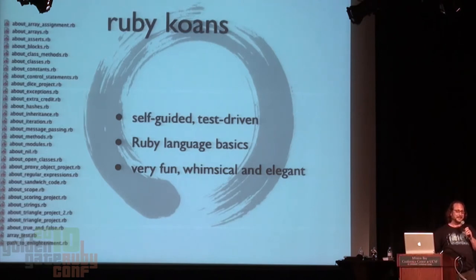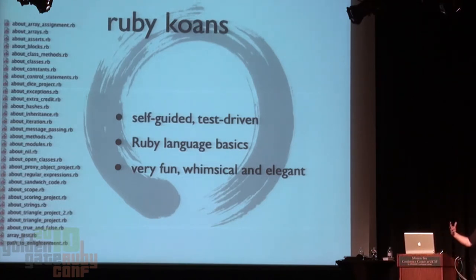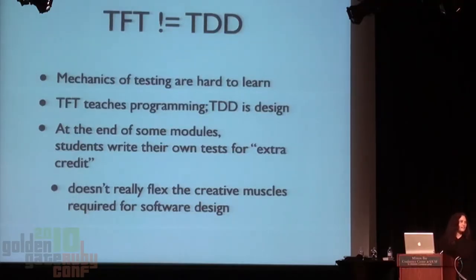Ruby Koans are another great example, and I would be remiss not mentioning them — not just because Jim is in the audience, but because Ruby Koans is actually kind of better than our stuff. It's certainly much more finely polished and more widely used. Ruby Koans are basically a self-guided test-driven way of learning the Ruby language, probably geared more towards people who already know how to program, whereas a lot of our stuff is tutorialed towards people who may never have programmed. Everybody should check out Ruby Koans. Test-first teaching is not TDD — that's a whole other class — but I think it prepares you well for it, because you learn the mechanics of testing, and then you can learn about test-driven development.